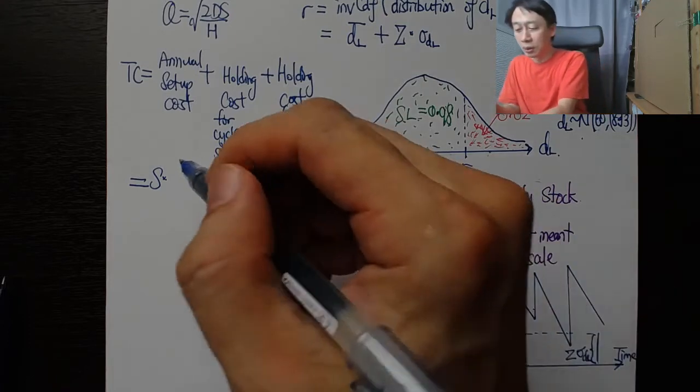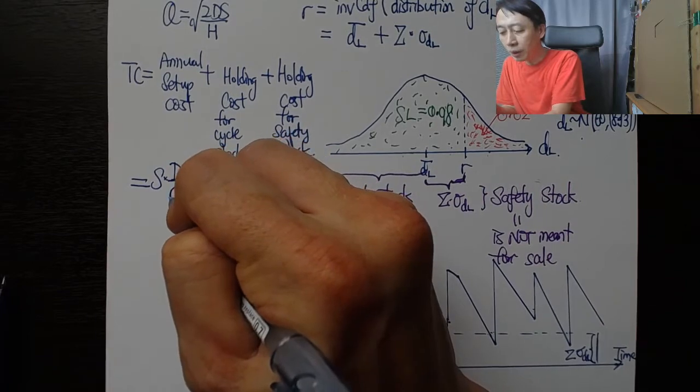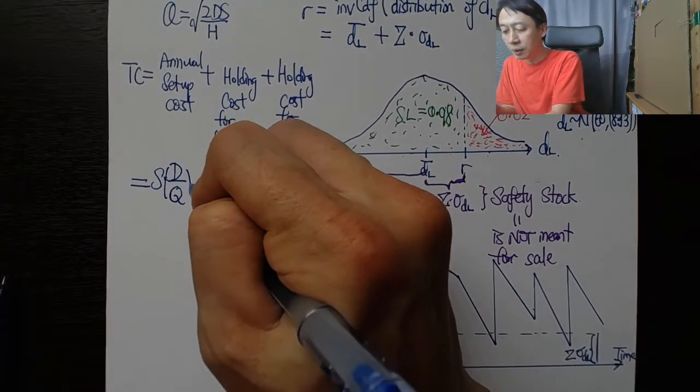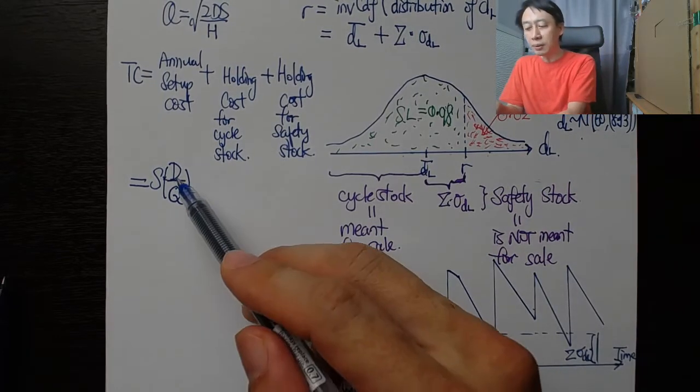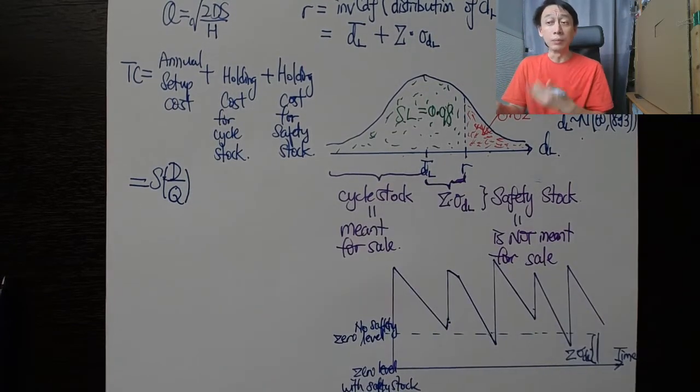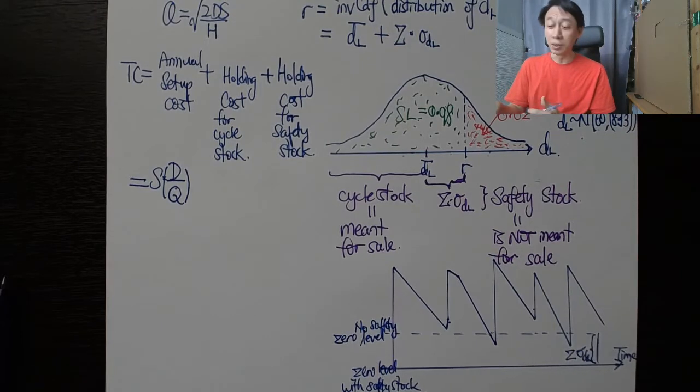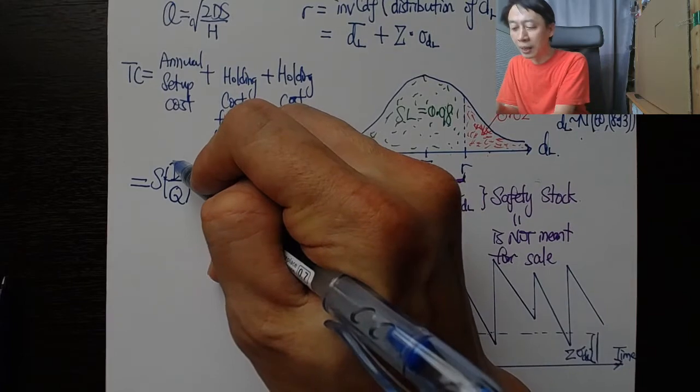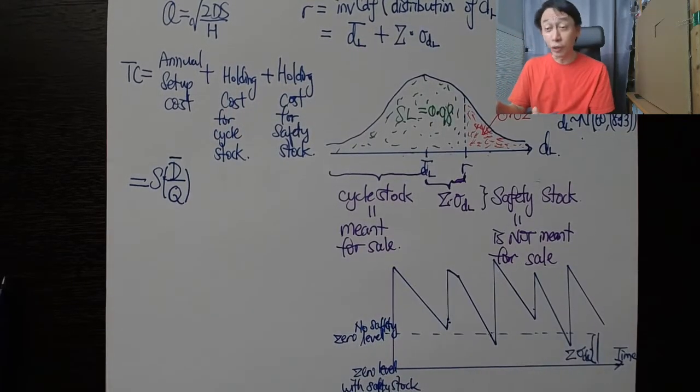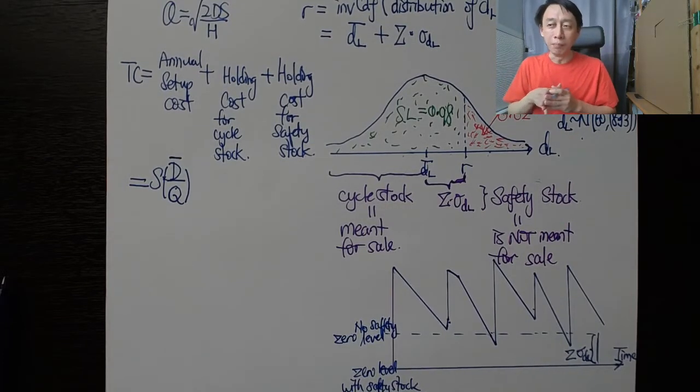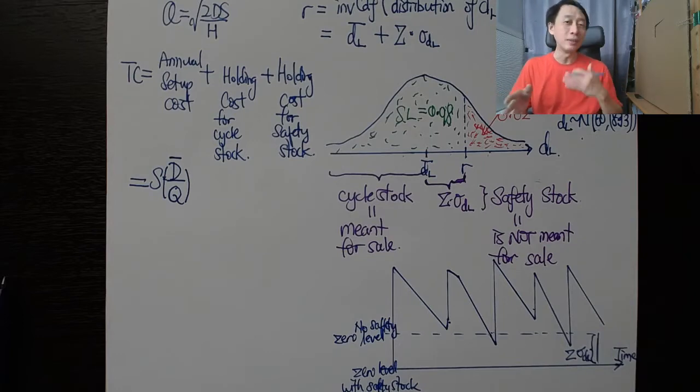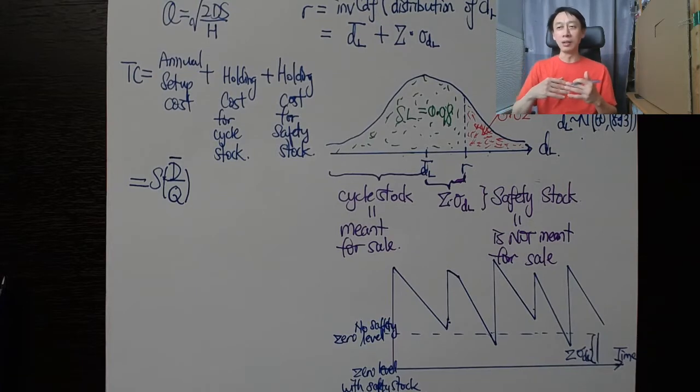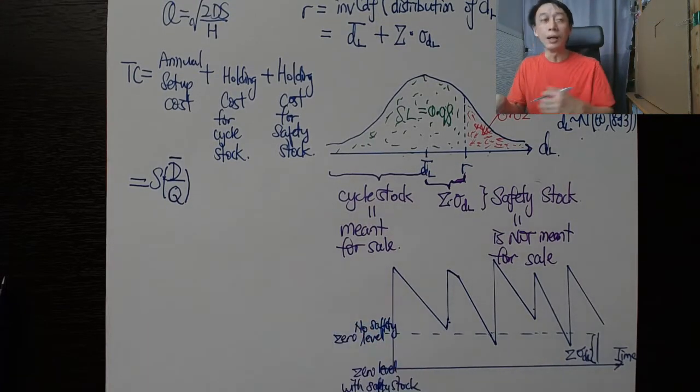What we have from the EOQ analysis was that the formula was D over Q, the order quantity, as the number of orders in a year. That remains true, except because capital D, the annual demand, is made up from daily demand little d, it will have a distribution. In other words, capital D will be probabilistic, so we're going to make it more technically correct by saying it is the average of the annual demand. One year we may be selling 6,000 tires, another year 6,500 tires, yet another year 5,800 tires, so it fluctuates. But there is some sense that it is at the 6,000 level, not at the 600 level, for example. So we can take the average and plug it in to estimate our average total annual cost of holding the inventory.